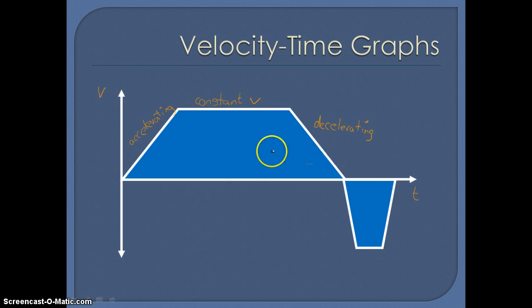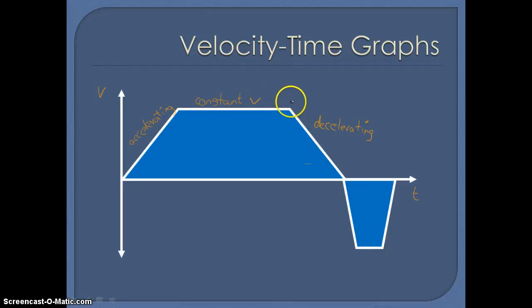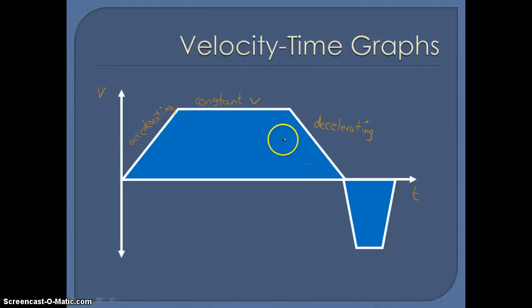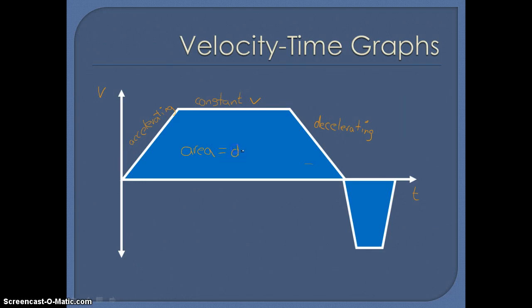To summarise the first part of the motion: sloping upwards means acceleration, a horizontal line means constant velocity, and sloping downwards means we're decelerating. Another property we can determine is by considering the area — the area under the velocity-time curve gives you the distance travelled.